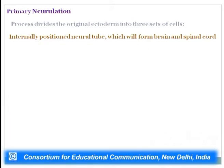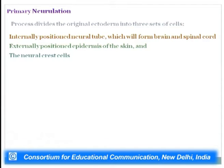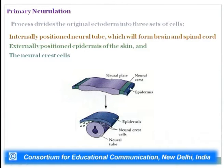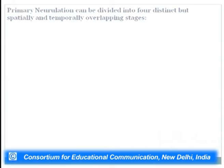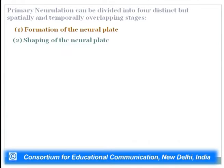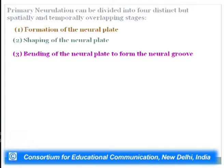Primary neurulation divides the original ectoderm into three sets of cells: the internally positioned neural tube forming the brain and spinal cord; externally positioned epidermis of the skin; and neural crest cells. Primary neurulation can be divided into four distinct but spatially and temporally overlapping stages: formation of the neural plate, shaping of the neural plate, bending of the neural plate to form the neural groove, and closure of the neural groove to form the neural tube.